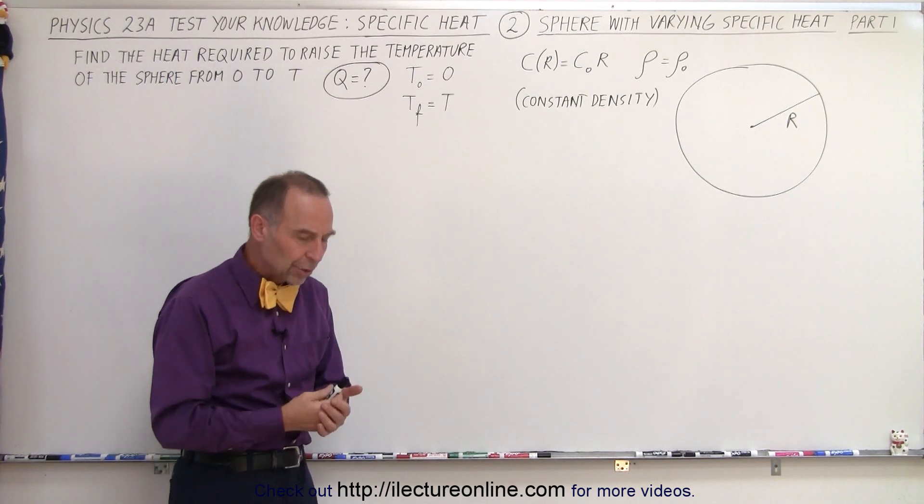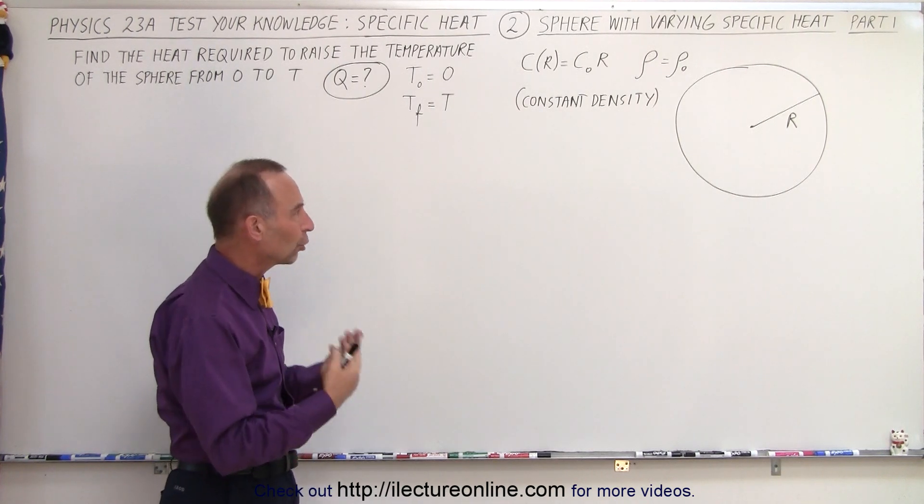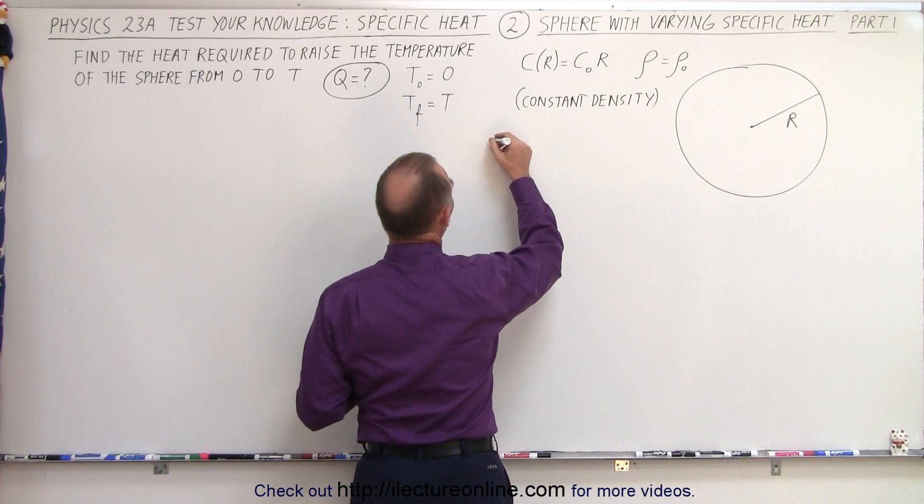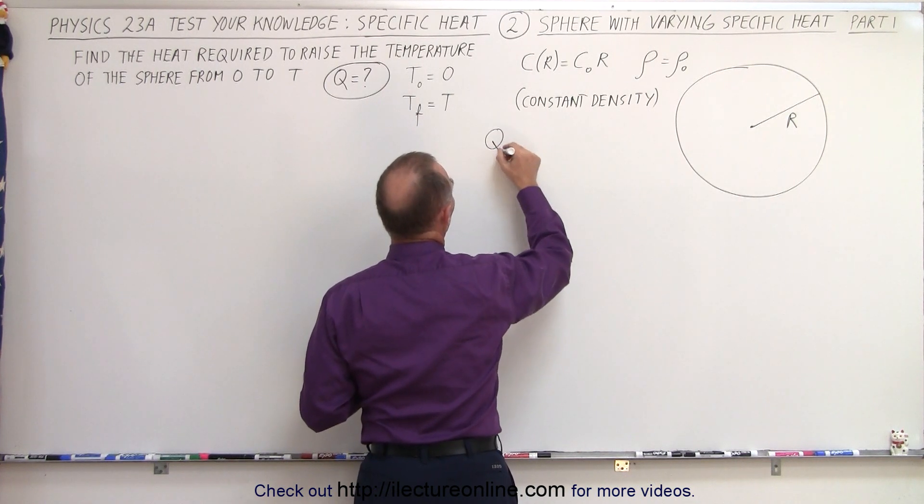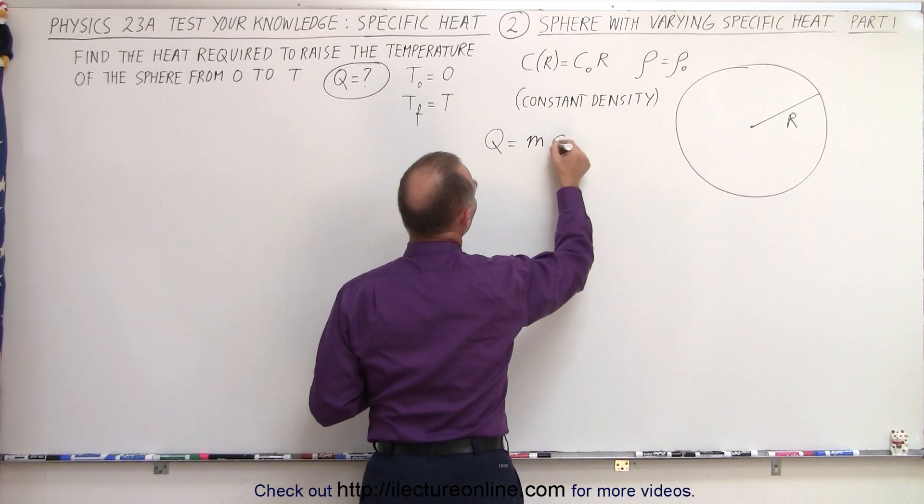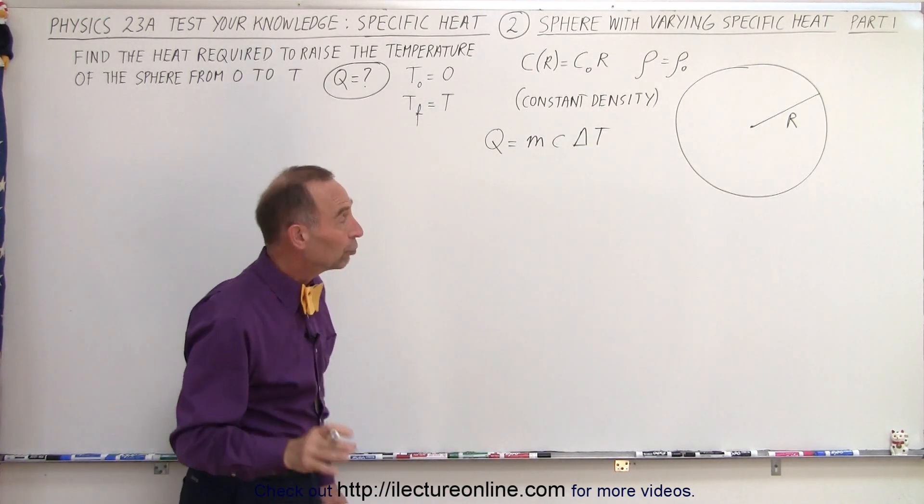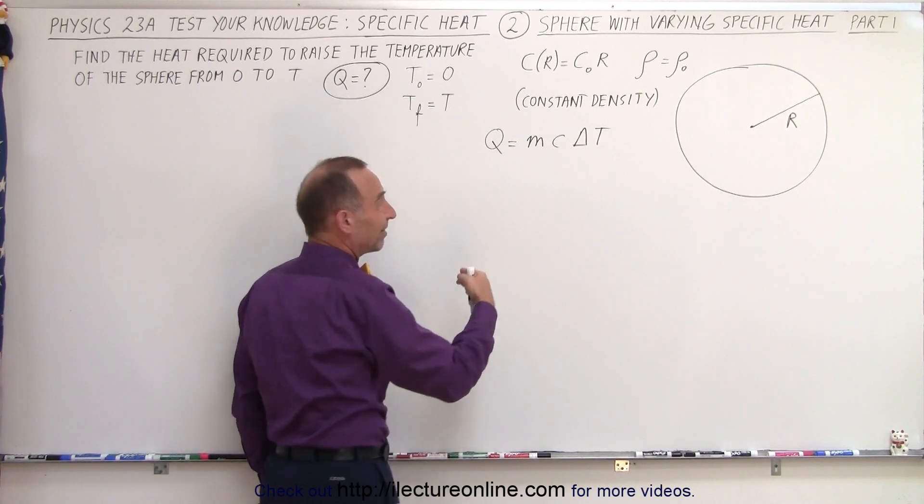So how do we do that? Well, when we're talking about specific heat, there's an equation where we can say that the heat required, the Q required, is equal to mC times the change in the temperature. Of course, that is only true if the C is a constant. In this case, the C is not a constant.